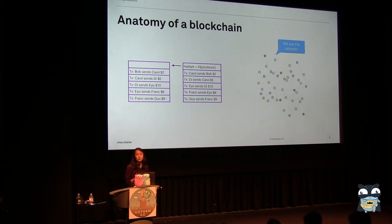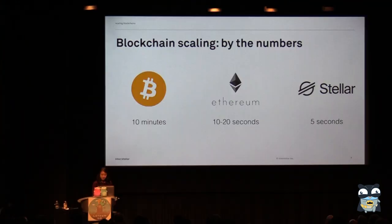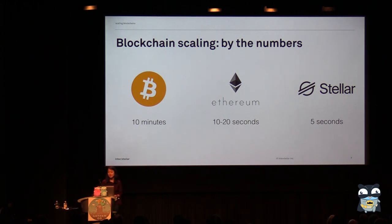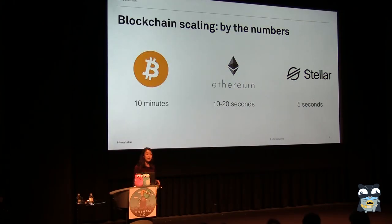If we're thinking about the real-world applications that we need, we can't really have global public networks with every single node validating all of the transactions that consumers, businesses, and people are doing. On the Bitcoin blockchain, it takes 10 minutes to confirm a block, so I submit my transaction and have to wait at least 10 minutes to find out whether or not it's been included.